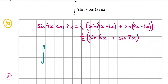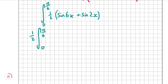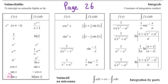So that gives us the integral from 0 to pi over 6 of a half times sine 6x plus sine 2x. Since half is a constant, we can take it outside the integral, giving us half times the integral from 0 to pi over 6 of sine 6x plus sine 2x. Now let's look at page 26 of our formula and tables book to find out how to integrate a trigonometric ratio such as sine.